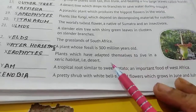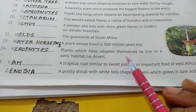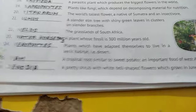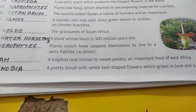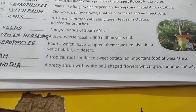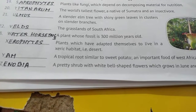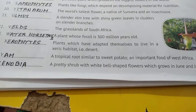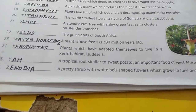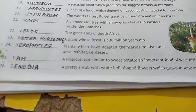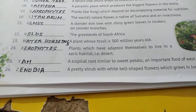Number twenty-four: plants which have adapted themselves to live in a xeric habitat — that is desert. Vaise plants jinhoone apne aap ko adapt kar liya hai to live in a desert. Those plants are xerophytes.